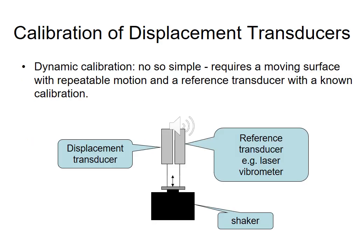Often with measurement transducers it's not sufficient to only do a static calibration, because we can get different behavior in a dynamic scenario — for example, there may be a frequency-dependent calibration. For displacement transducers, we typically introduce a reference measurement such as a laser vibrometer, integrate its velocity output to get displacement, and compare that alongside our displacement transducer while introducing vibration of fixed frequency and amplitude using an electrodynamic shaker.